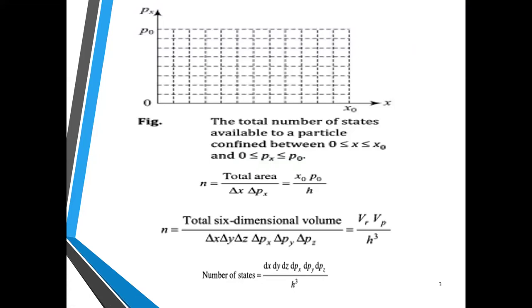Quantum statistical mechanics (QSM) says you cannot make a volume of a unit cell smaller than h³, where h is Planck's constant. This is the profound important difference between CSM and QSM. Classical says: make the unit volume as small or as big as possible, I have no problem. But QSM says: you can make it small, but not smaller than h³ where h is Planck's constant. In CSM, the h alphabet used to define phase space volume is not Planck's constant — it is just an arbitrary symbol.